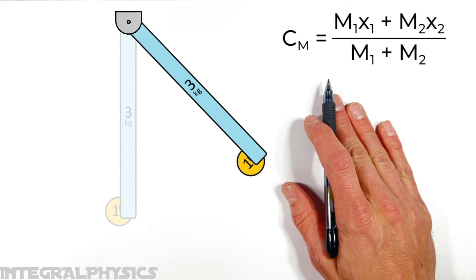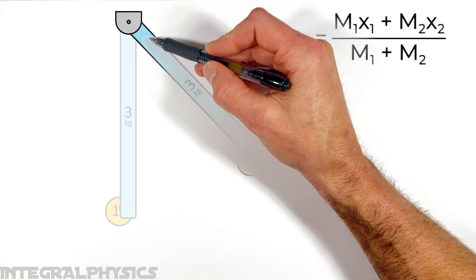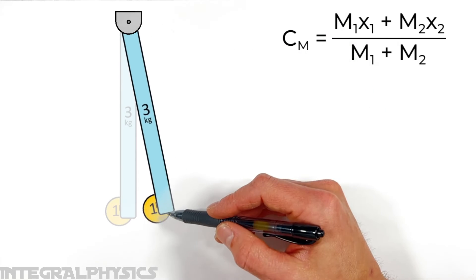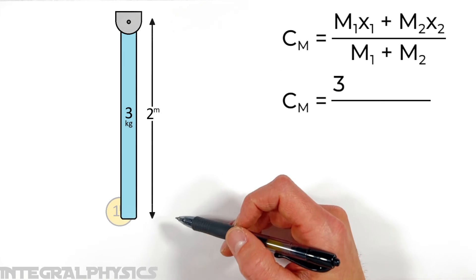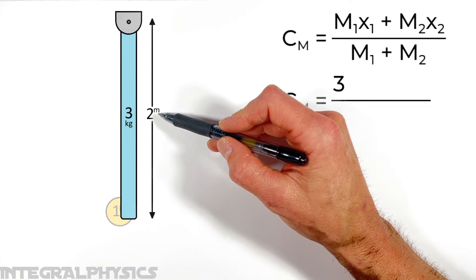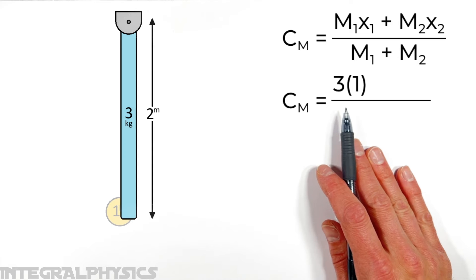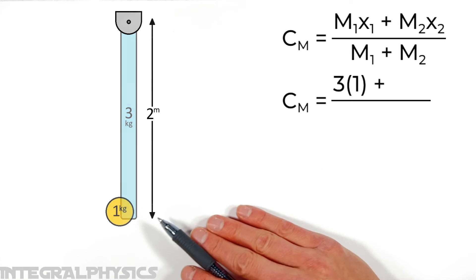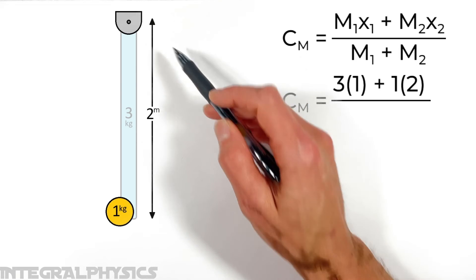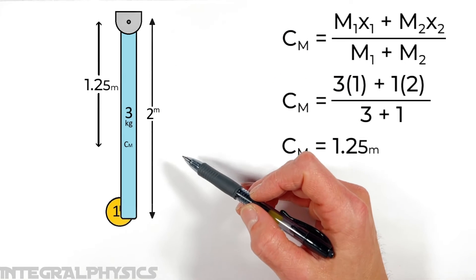The center of mass of any assembly of objects is given by the weighted position equation. We find the center of mass relative to the pin, which we call position zero. The rod has mass 3 kg and length 2 m, so its own center of mass is at position 1 m. The ball has mass 1 kg at a distance of 2 meters beneath the pivot. Plugging in the masses, we find that the center of mass of the entire system sits 1.25 meters beneath the pivot point.